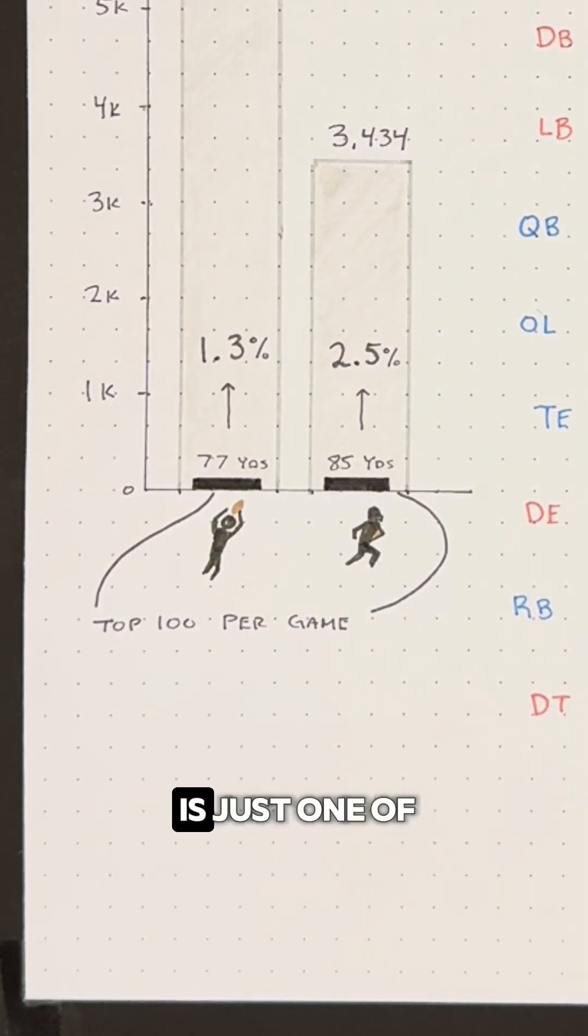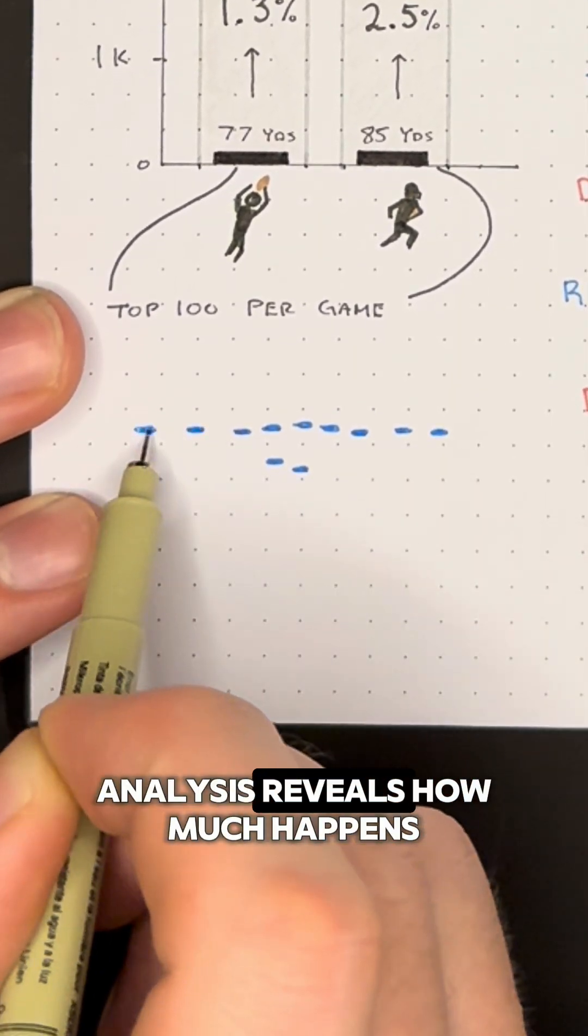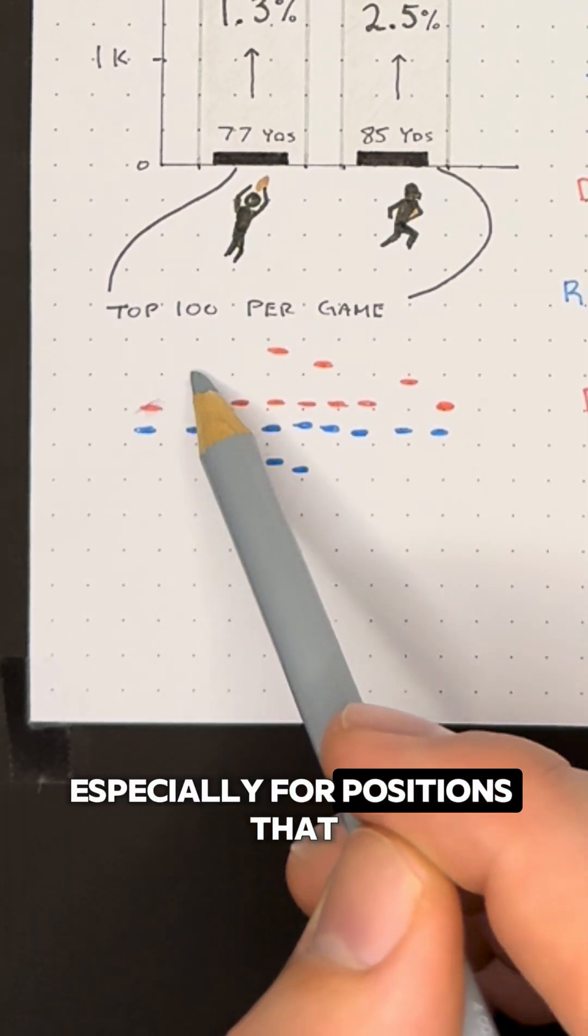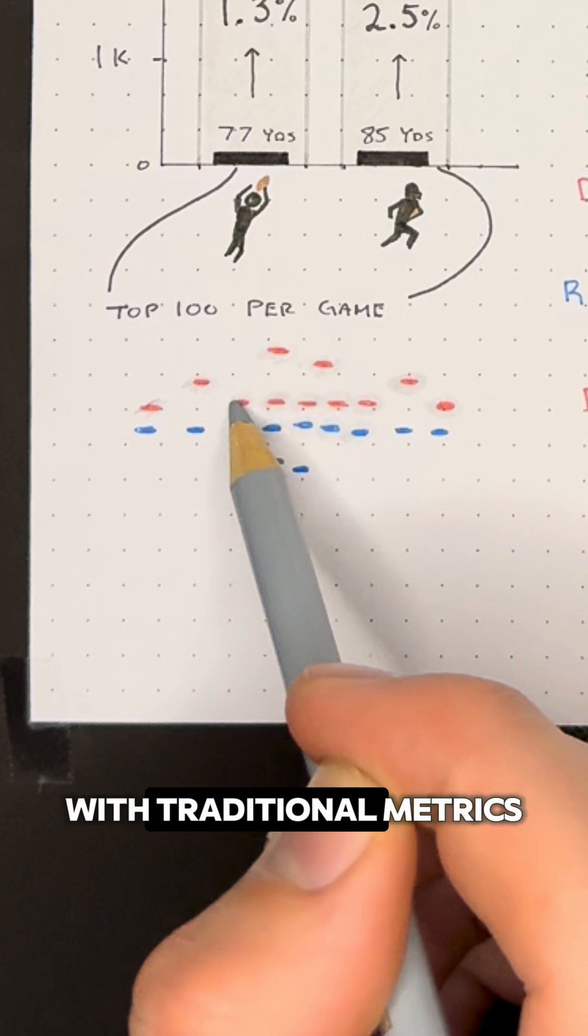Of course distance traveled is just one of many metrics used to assess players, but even this quick analysis reveals how much happens beyond the box score in a football game. Especially for positions that rarely touch the ball, it becomes even harder to quantify their impact with traditional metrics.